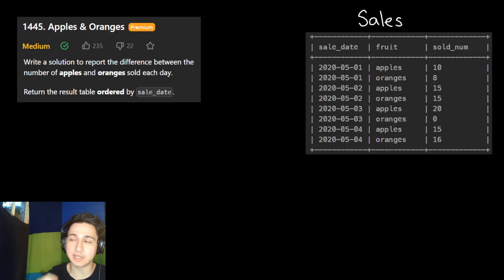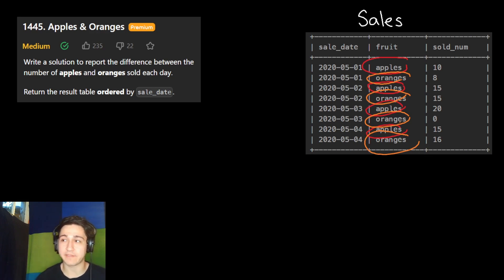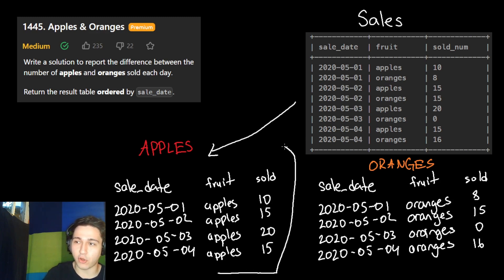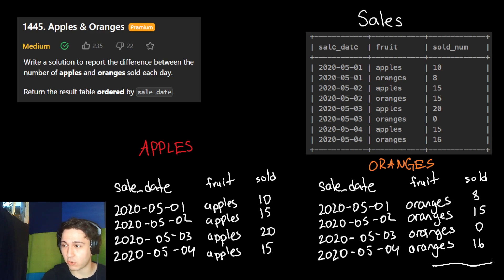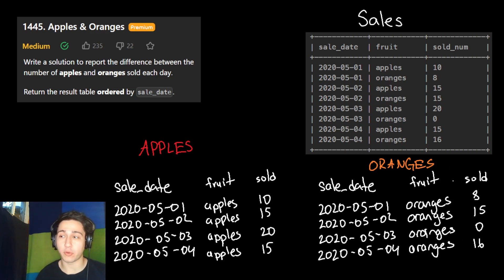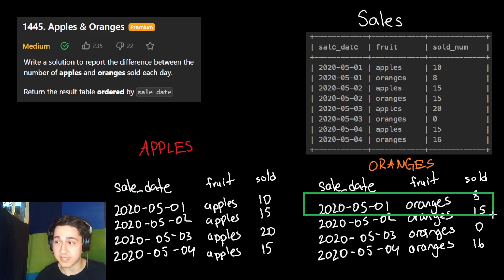An important thing to notice is that we're dealing with two types of data — either apples or oranges, and that's all our table contains. A very good first step when you don't know what to do is to try to split this table into two smaller tables: all the apples in one table and all the oranges in another. We took all rows where the fruit was an apple using a query like: select everything from our sales table where fruit equals apples. And then in the same way for oranges.